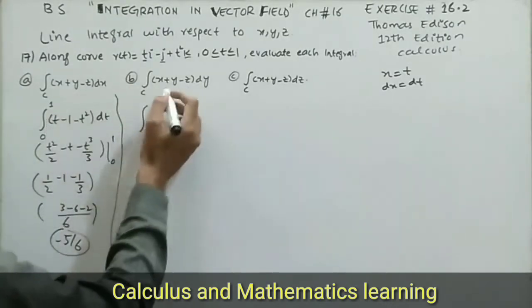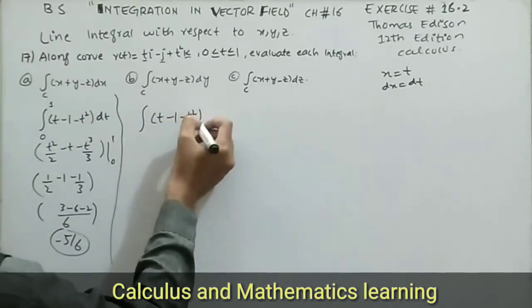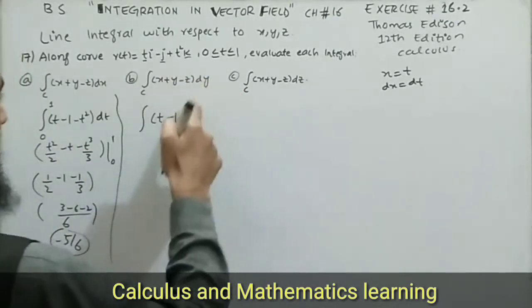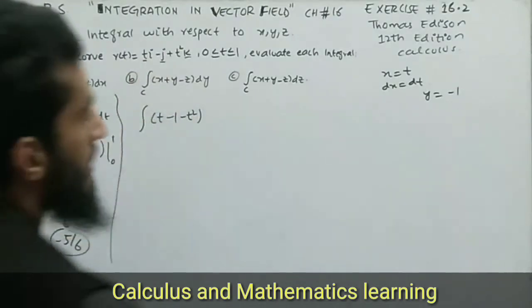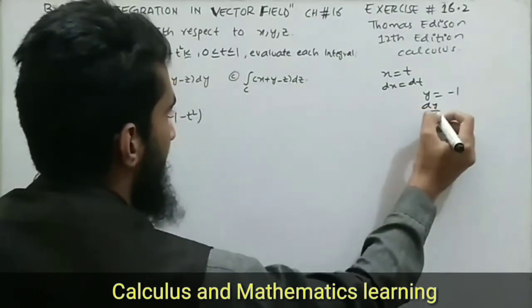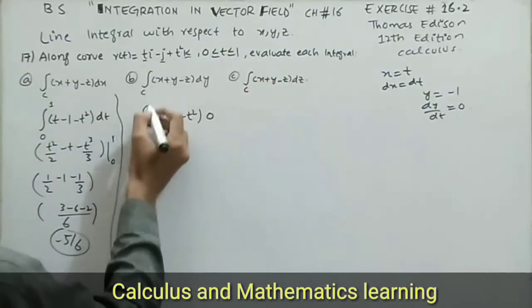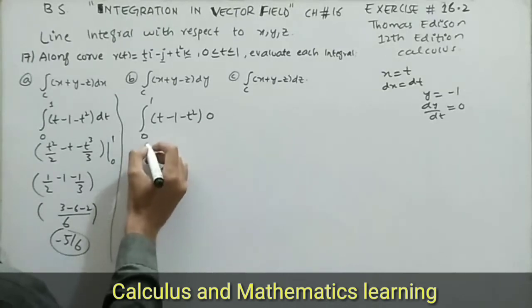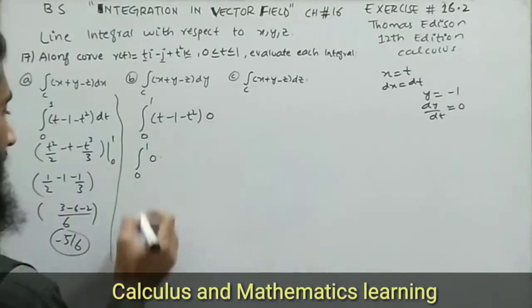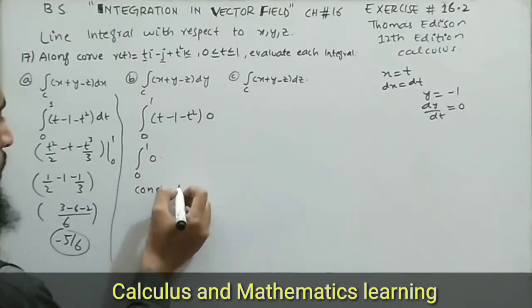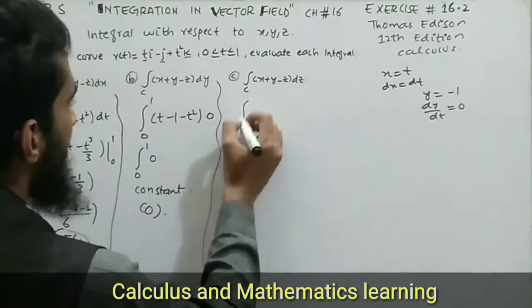Now solving part b. We have the same expression x plus y minus z. Putting x=t, y=negative 1, z=negative t². But here we have dy, not dx. Since y equals negative 1, differentiation gives dy/dt equals 0, so dy equals 0. The entire integral from 0 to 1 becomes 0, so the result of this integral is 0.